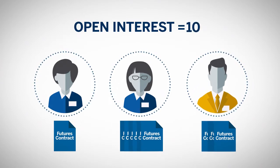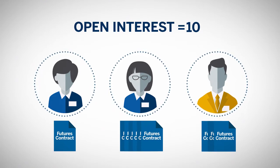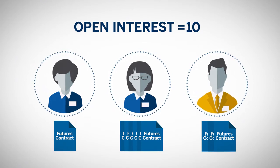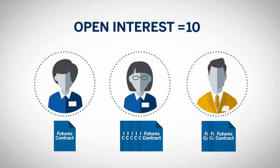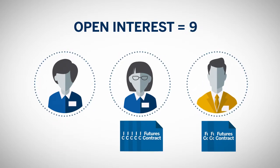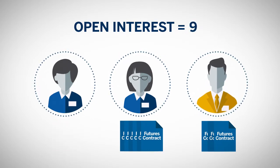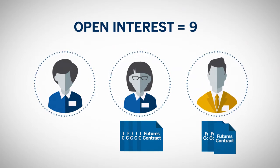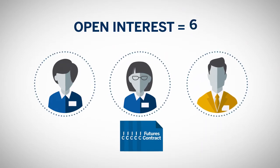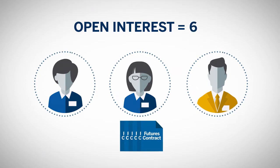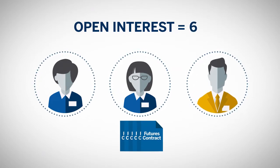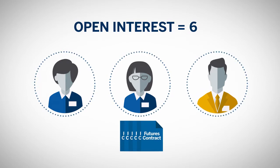Open interest would remain at ten until the traders exit their positions, at which point open interest declines. For example, open interest declines to nine when Sharon sells one contract. When Kurt decides to exit his position, he buys back his three contracts and brings open interest down to six. Until Cynthia decides to sell her six contracts, open interest will remain constant at six.